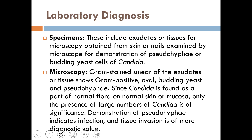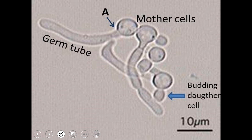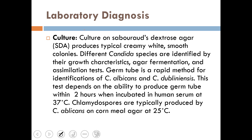The figure shows gram-positive budding yeast of Candida species. The germ tube test is also shown — if a cell has produced a germ tube, that identifies it as Candida albicans. For the culture method, the organisms are grown on Sabouraud dextrose agar and white pasty-like colonies are commonly observed.